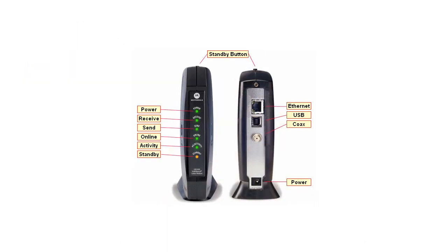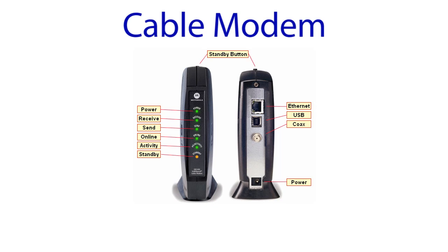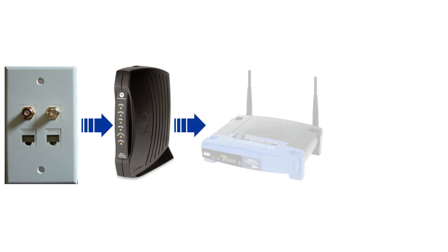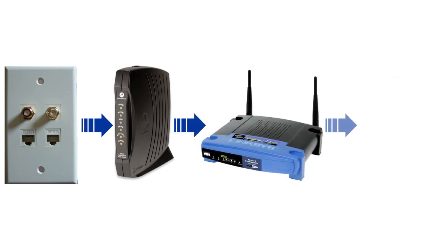Anyway, if rebooting the computer doesn't solve the problem, you'll want to look at your cable modem or DSL modem. It should have a series of lights on it, like this one. On a cable modem, the lights will typically be labeled Power, Receive, Send, Online, Activity, and Standby. Usually the first four lights should be on and the Activity light should be blinking sporadically. If this is not the case, you'll want to check your connections from the wall outlet to the modem, to your router if you have one, to your computer.